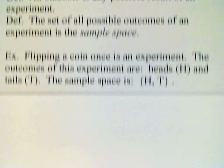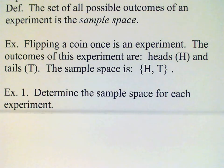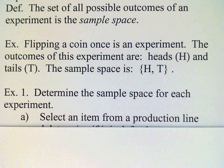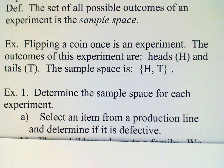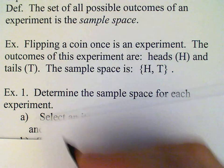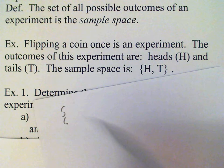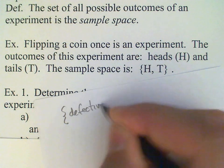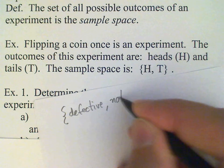Let's look at two more examples. First, we select an item from a production line and determine if it is defective. So the sample space in this case would just be a two-element set again: the item could be defective or not defective.